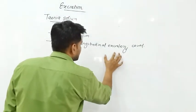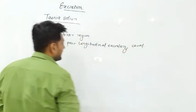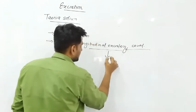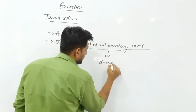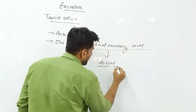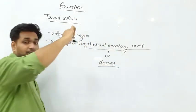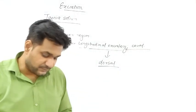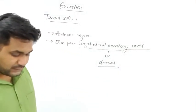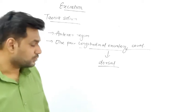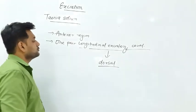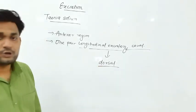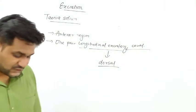This longitudinal excretory canal is located in the dorsal portion — the dorsal side of the body.